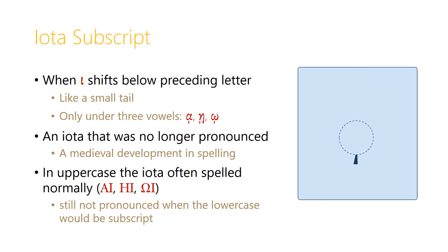Those are our diphthongs, but there's one other vowel that is written a little bit differently. This is when an iota shifts below the preceding letter and is written like a small tail below it. This happens only under the three vowels alpha, eta, or omega, and it indicates an iota that was no longer pronounced. This is the only silent letter in Greek writing. The iota subscript was a medieval development in spelling, where they wanted to keep the iota for recognizing the word form, but didn't want to write a full iota in case it would be mistaken for a pronounced letter. In uppercase Greek, the iota is often spelled normally as a full iota, but it's still not pronounced even when the lowercase would be an iota subscript.